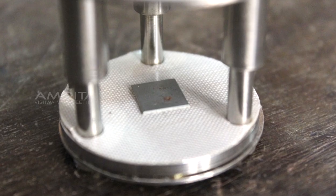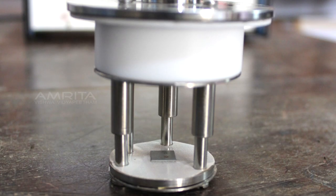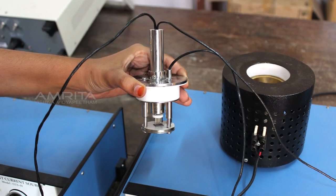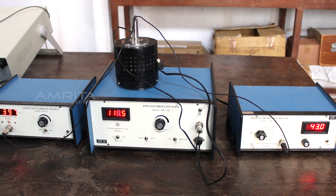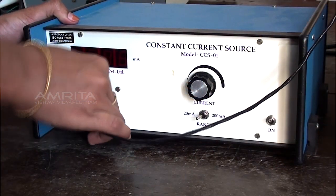Procedure: The sample is loaded carefully in the sample space provided. Mount the 4 probes on the thin slice of the sample without damaging it. A constant current is passed through the outer probes connecting it to the current source.